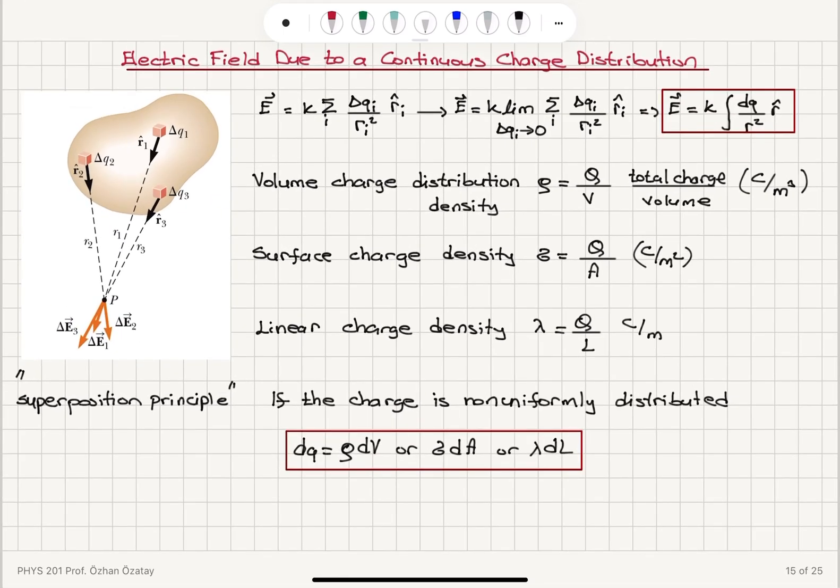So for example, we have delta Q1 over R1 square R1 hat multiplied with K, that would be delta E1. And for delta E2, we will have K delta Q2 over R2 square R2 hat, so on and so forth.